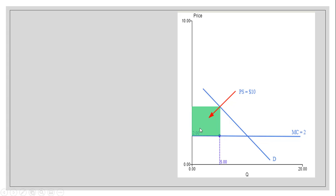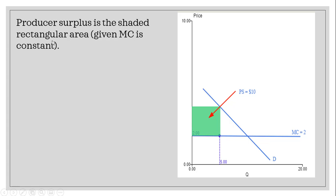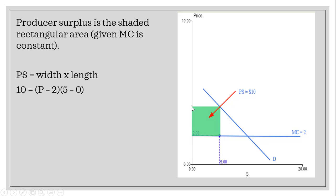What we do know is that producer surplus is $10. Producer surplus is the shaded rectangular area — since marginal cost is constant, it's a rectangle. The area is width times length: the width is the monopolist's profit maximizing price minus marginal cost, and the length is the profit maximizing output minus zero. So we have one equation and one unknown, and we're going to solve for the price.